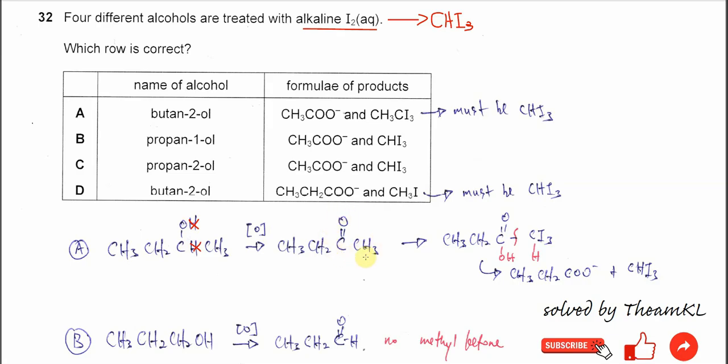When there is a methyl ketone, it will further react with this alkaline iodine solution. There are two processes. The first process is halogenation, means the hydrogens here will be substituted by iodine. So from CH3 it will form CI3.